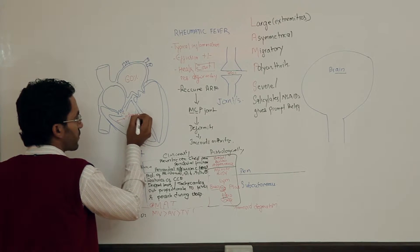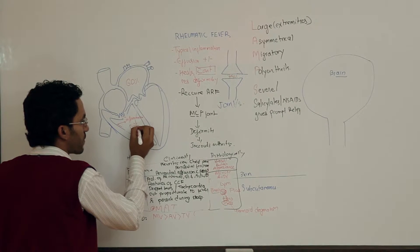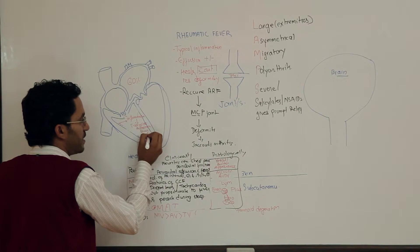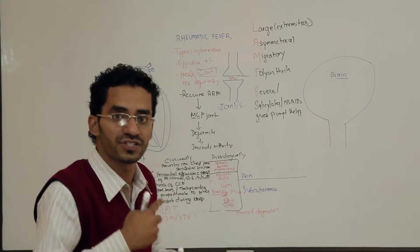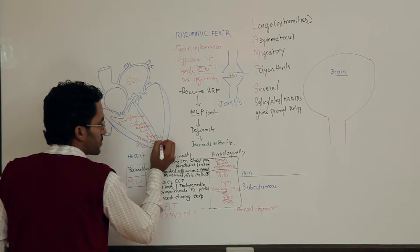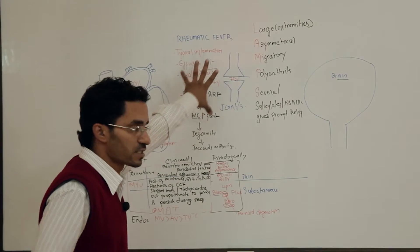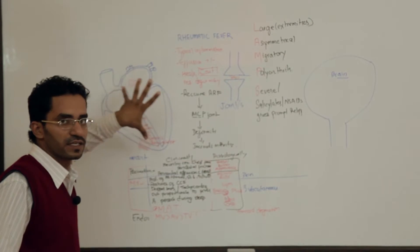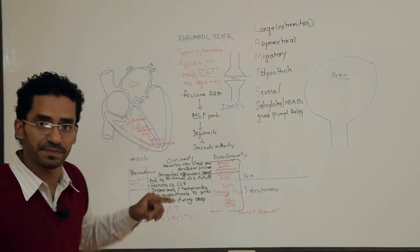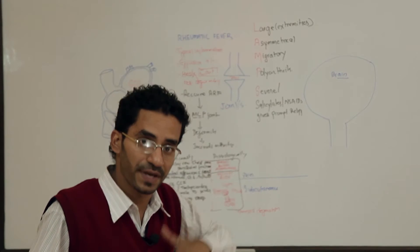In the endocardium, initially there is inflammation in the valves, and during the process of healing there is fibrosis, adhesions, and scar formation leading to variable degree of stenosis and regurgitation. Remember, almost 60 percent of patients with rheumatic fever have involvement of the heart.